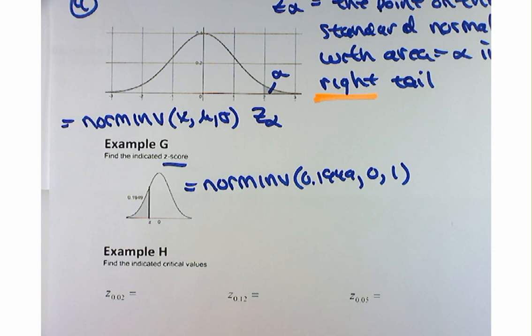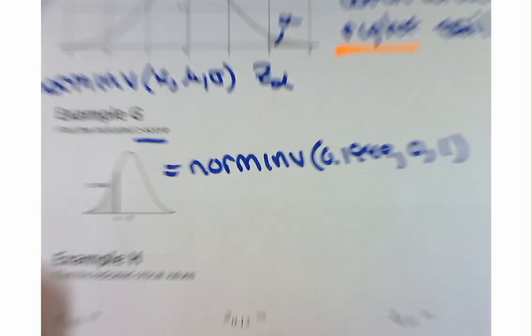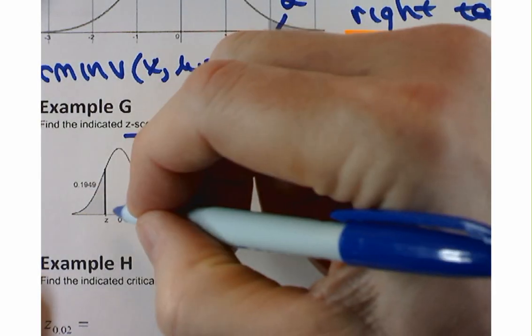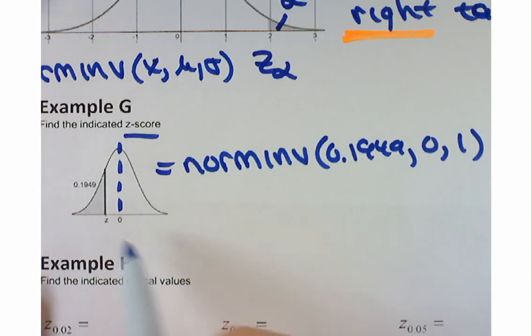Quick question: do you expect our Z value to be positive or negative? Well, it's to the left of 0, right? So it should be a negative value.